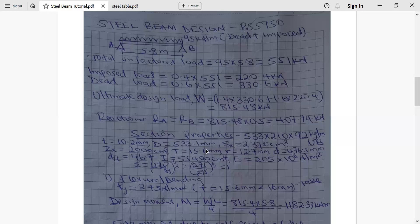We know that this is a symmetrical arrangement. Reaction at A is equivalent to reaction at B which is equivalent to a half of the ultimate design load which is equal to 850.48 times 0.5 getting 425.24 kilonewton.